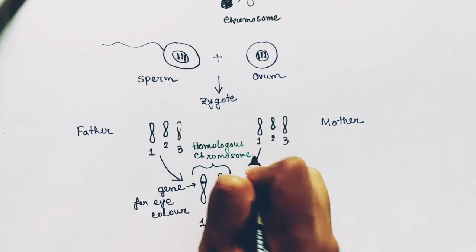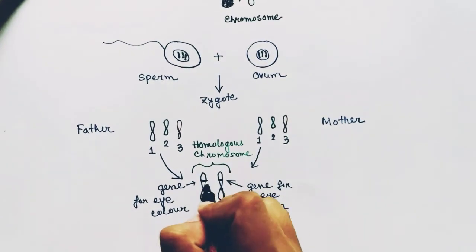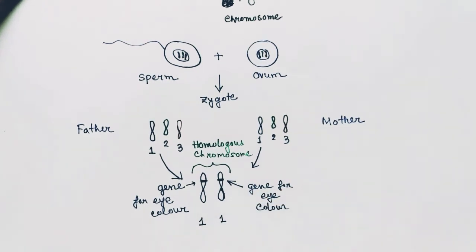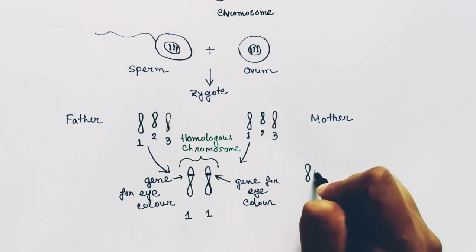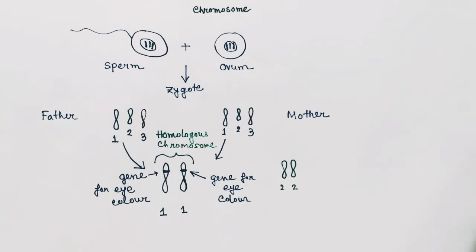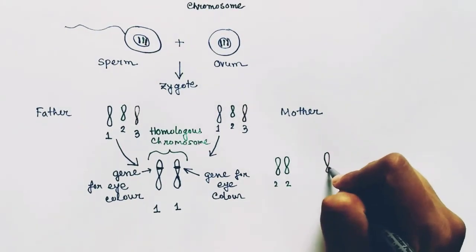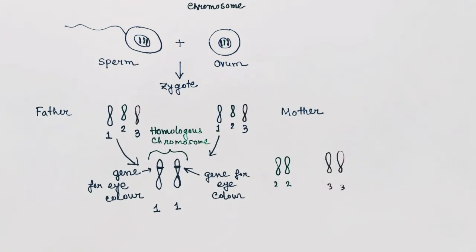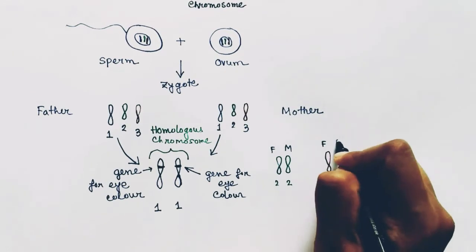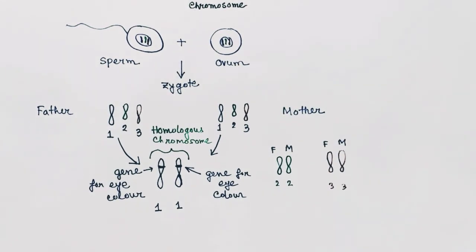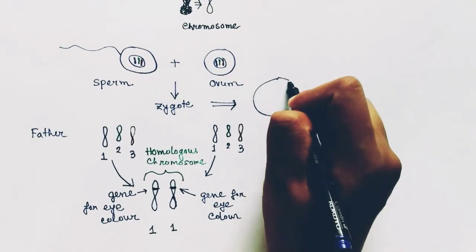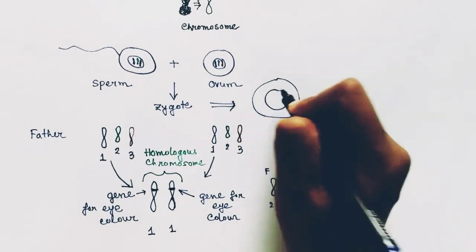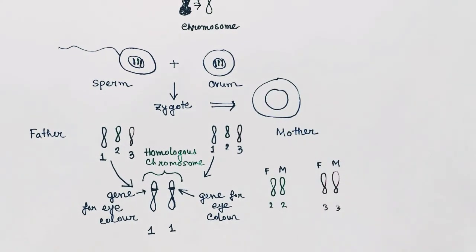So they are called homologous chromosomes because they have the same genes in the same locus and are quite similar in structure. Chromosome number two from the father will pair with chromosome number two from the mother, and chromosome number three from the father will pair with chromosome number three from the mother. These pairs are the homologous pairs or homologous chromosomes.